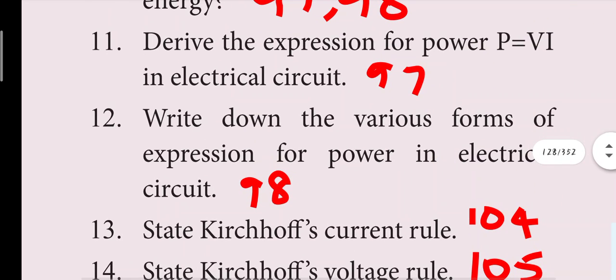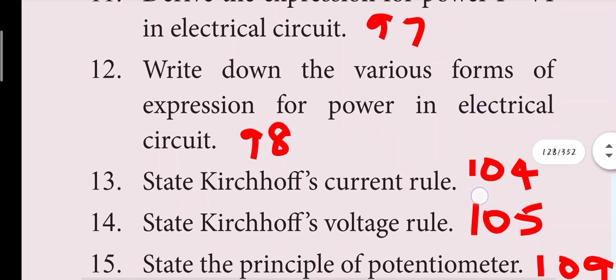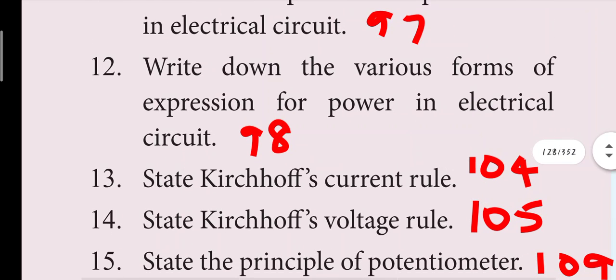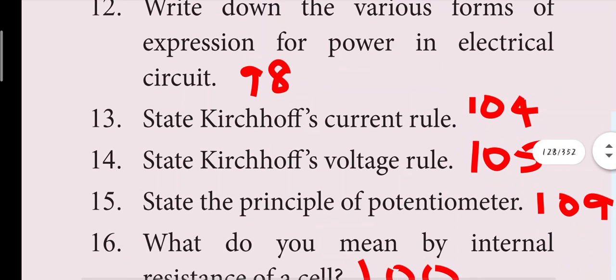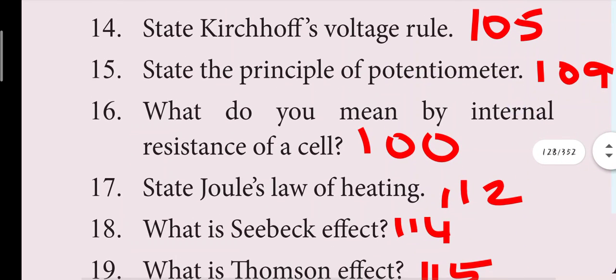The 11th question: derive the expression P = VI in an electrical circuit, page 97. The 12th question: write the various forms of expression for power in an electric circuit, page 98. State Kirchhoff's current rule, page 104. Kirchhoff's voltage rule, page 105. Principle of potentiometer, page 109. Internal resistance, page 100.